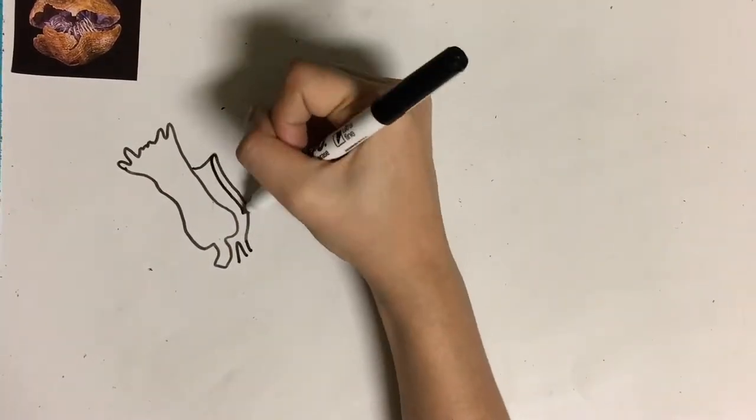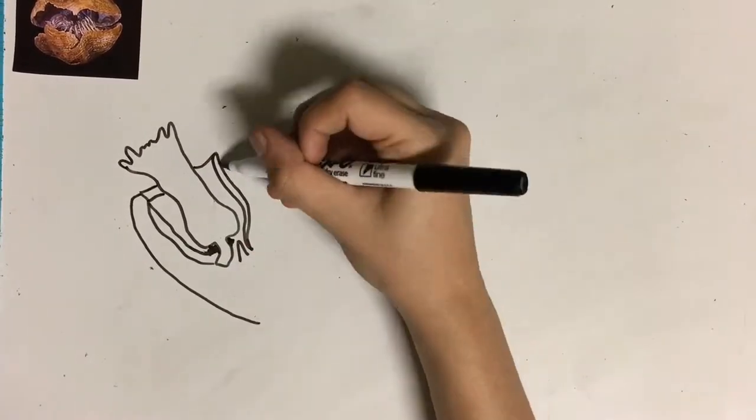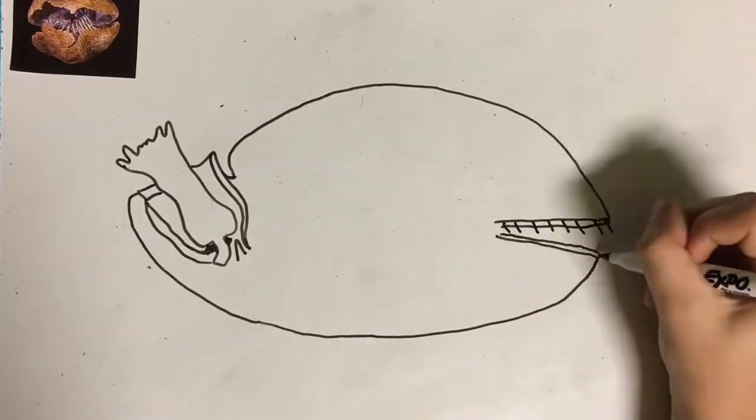These animals have two shells which are symmetrical about the midline and differ slightly. They also have a stalk on their bottom to attach to the seafloor.